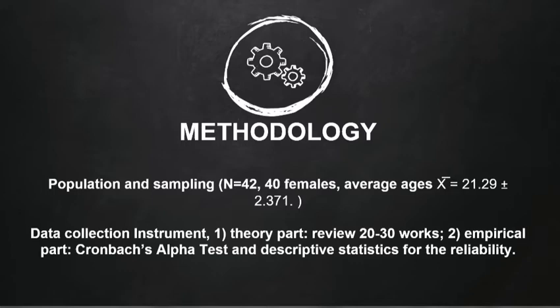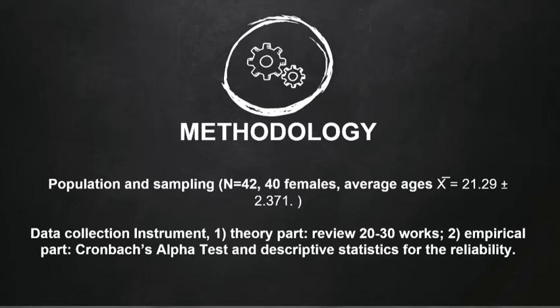The sample for this pilot project has 42 participants, with 40 females, because of the kindergarten teacher education course, so there are only two males. The average age is 21.29 and the standard deviation is 2.371. The data collection instrument has two parts: the first is an empirical literature review of 20 to 30 works regarding self-regulated learning, especially the use of the MSLQ instrument, and the second part uses Cronbach's alpha and descriptive statistics for testing the reliability of the instrument.